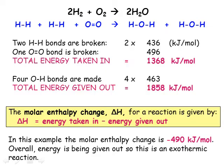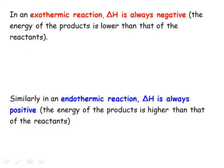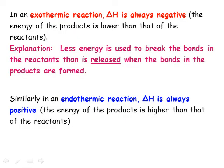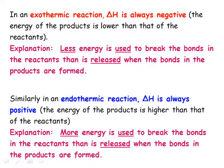In an exothermic reaction, delta H is always negative, because less energy is needed to break the bonds in the reactants than the energy that's released when the bonds in the products are formed. Conversely, for an endothermic reaction, delta H is always positive, because more energy is needed to break the bonds in the reactants than the energy that's released when the bonds in the products are formed.